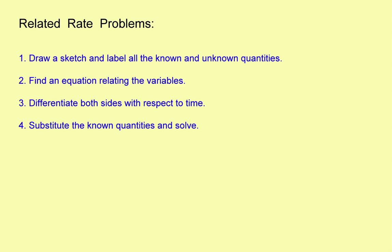Let's take a look at Part 2 of Related Rate Problems. We're going to follow the same four steps that we had in Part 1: draw a sketch and label the variables, write an equation that ties them all together, differentiate both sides with respect to time, and then substitute the known quantities and solve.